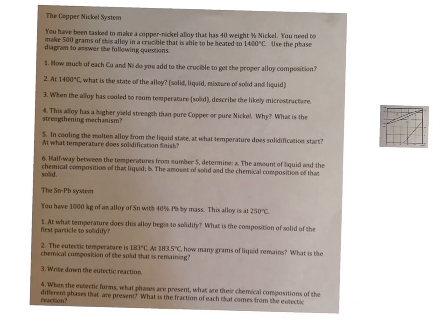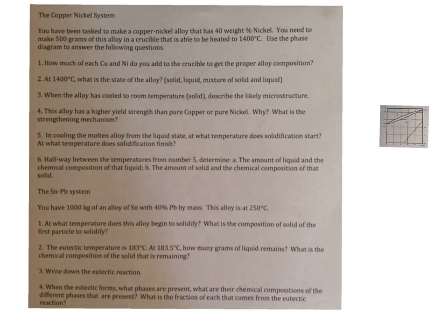In this video, I'm going to go through as many solutions I can on the copper-nickel system. So we'll start with these set of questions here. The scenario is that you've been tasked to make an alloy that has 40 weight percent nickel. It's a copper-nickel alloy and you need to make 500 grams and the crucible is heated up to 1400 degrees C and then we have a number of questions to answer about that.